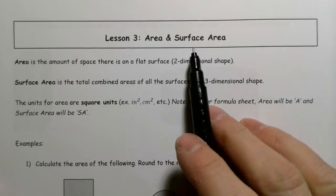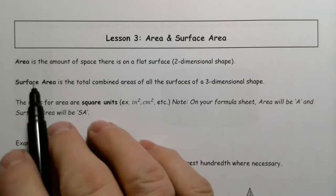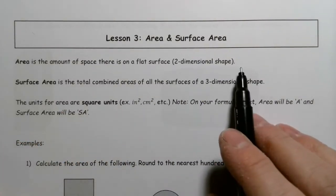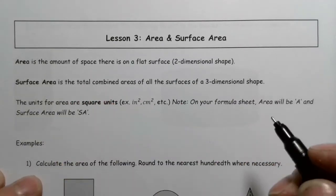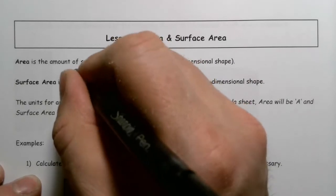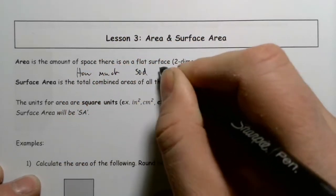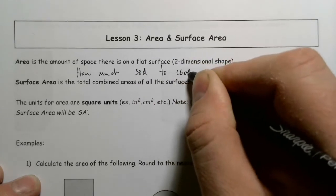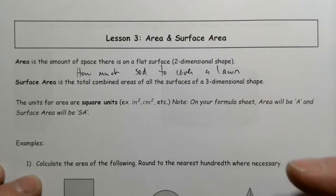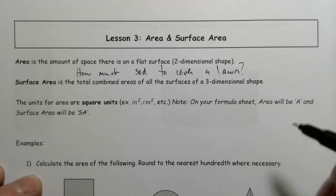In this lesson, we're going to look at Area and Surface Area, which are related but slightly different ideas. Area is the amount of space on a flat surface — this is a two-dimensional measure. For example, how much sod to cover a lawn would be an area problem.